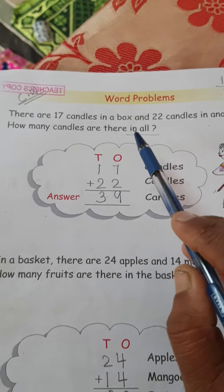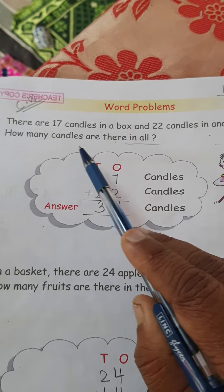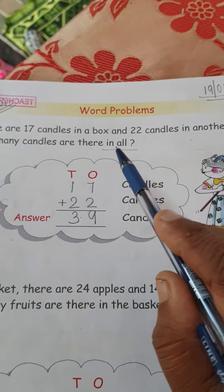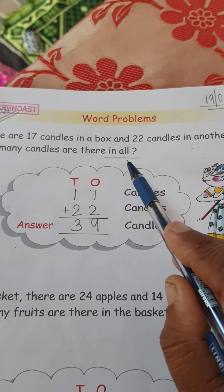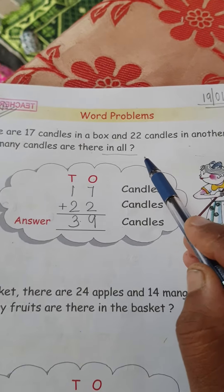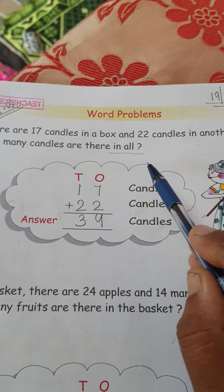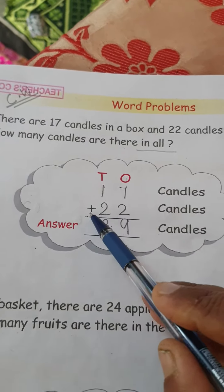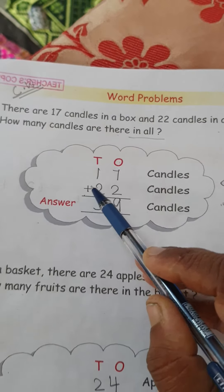Another thing is, you have to see in the last line what is written here. In all. When you see in all, all together, total number of, means you have to solve those problems by addition. Addition means this sign.